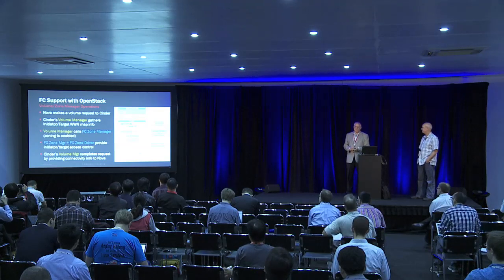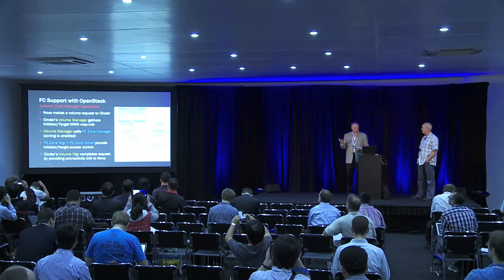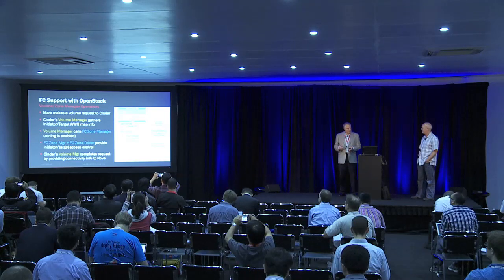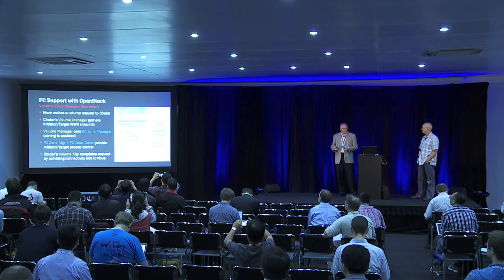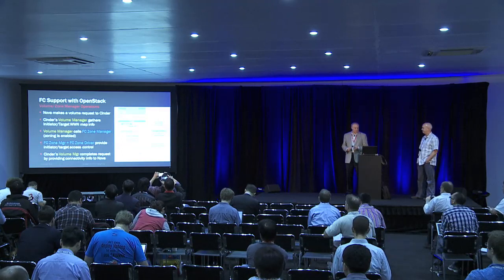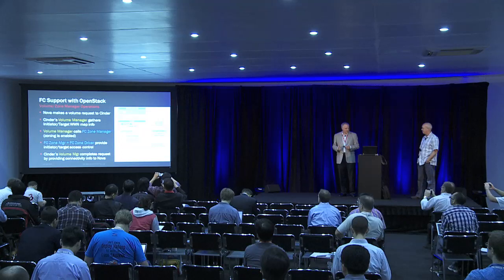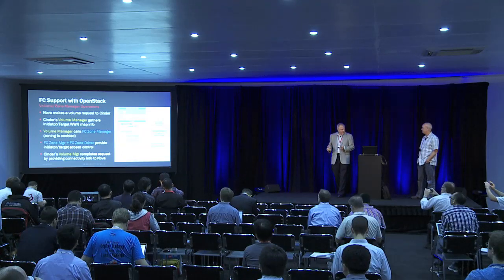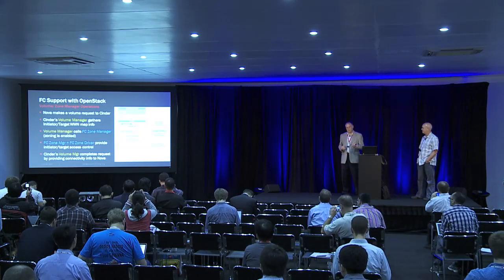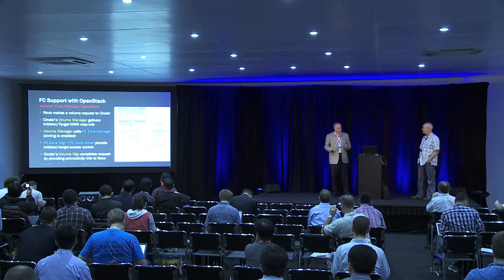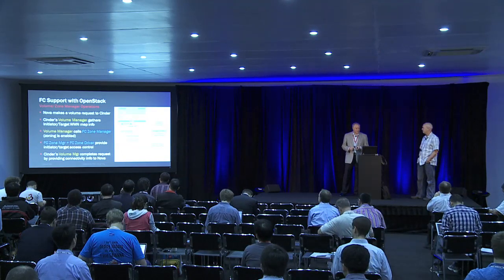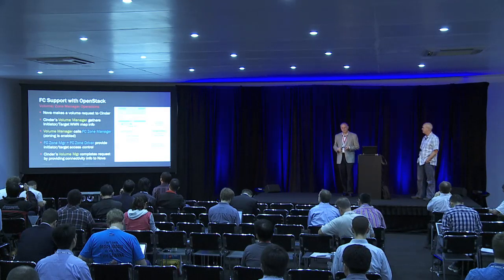Nova makes a volume request to Cinder. The volume manager will gather initiator and target worldwide name info, and then the volume manager will call the zone manager. Zoning has to be enabled. The Fibre Channel zone manager and zone driver will provide the information needed to create the zone, so that you'll have either single initiator/single target, or single initiator/multiple target type zones, depending on how it's configured. The Cinder volume manager completes it by telling Nova about the connection.